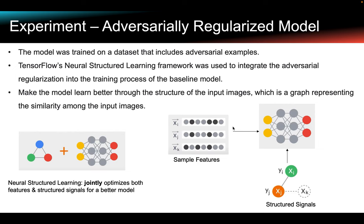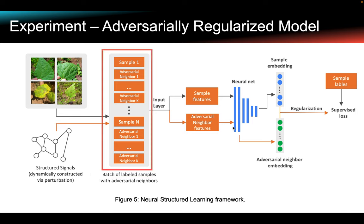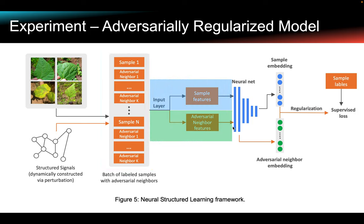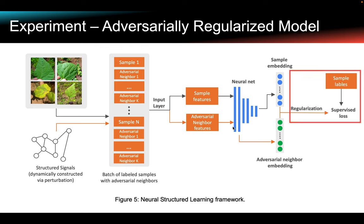Let me provide more details about this whole training process. First, each training sample is augmented to include its adversarial neighbor information from a given structure. Specifically, the adversarial neighbor information refers to the features of an adversarial neighbor. So we get a new training batch where both the original training samples and the adversarial neighbors are included. Next, both the training sample and its adversarial neighbors are fed into the neural net. After the training sample is fed into the neural net, its features activate different neurons layer by layer, forming an embedded representation for the sample. The adversarial neighbor is processed in the same way, so we will have an embedding representation for the adversarial neighbor as well. Then, the difference between the sample embedding and its adversarial neighbor's embedding is calculated and added to the final loss as the regularization term.